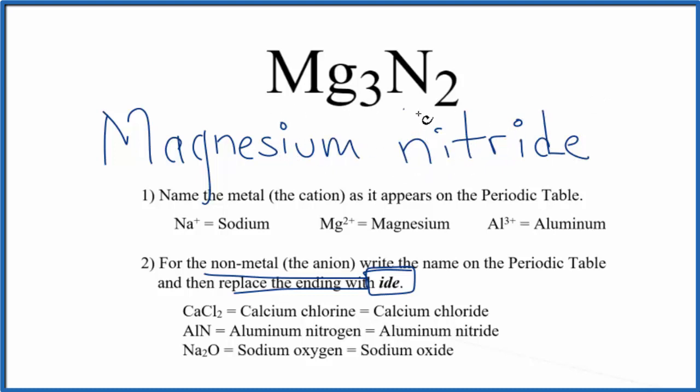If you were given the name here and asked to write the formula, you'd need to realize that magnesium on the periodic table has a 2+ ionic charge. Nitrogen forms 3- ions, so each nitrogen is 3-.